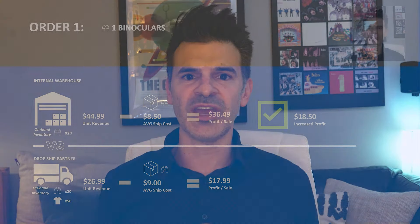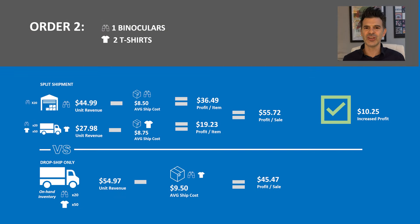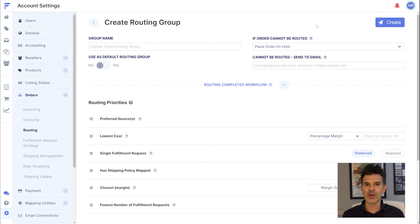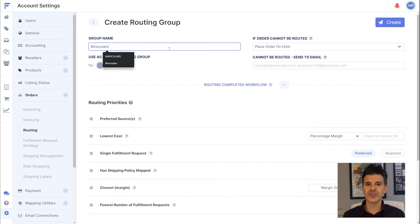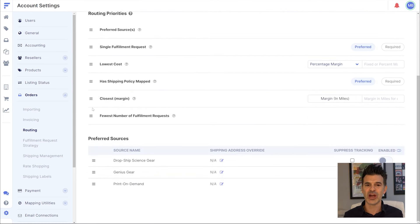Now let's optimize things a bit further. These routing rules make sense for most of my warehouse items, but I ran the numbers on my binoculars — the margin from my warehouse is much better, so I always want to prioritize my warehouse, even if it means multiple boxes. FlexPoint is able to handle this task. First, I create a new routing group. With this group, I will always prioritize my warehouse over the dropshipper for the binoculars, regardless of the number of boxes.